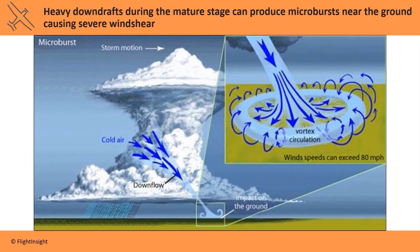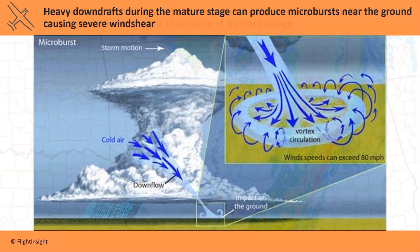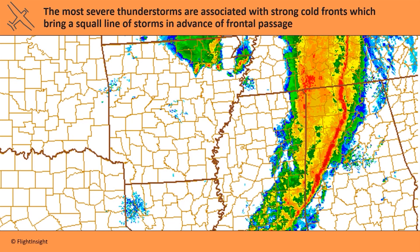These downdrafts that bring rain also bring cold air very rapidly towards the surface. As this air impacts the ground it spreads out, creating a vortex of air called a microburst. These microbursts typically occur in advance of the line of showers from the storm. The most severe thunderstorms are associated with strong cold fronts which bring a squall line of storms in advance of frontal passage. This radar image shows a line of storms being carried by a cold front stretching across the southern US.